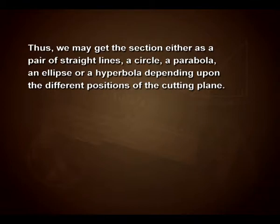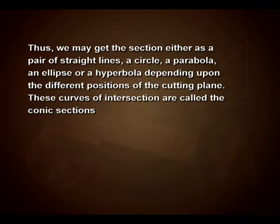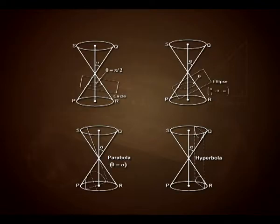Thus, we may get the section either as a pair of straight lines, a circle, a parabola, an ellipse, or a hyperbola depending upon the different positions of the cutting plane. These curves of intersection are called the conic sections. We can view on the monitor here four different figures in which we can see a circle being formed. In the second case, an ellipse; in the third one, a parabola; and the fourth one shows a hyperbola.